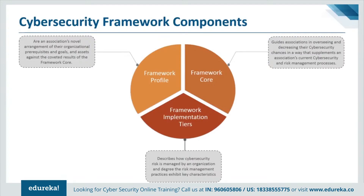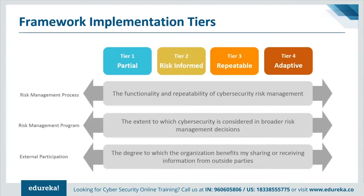Profiles are primarily used to identify and prioritize opportunities for improving cybersecurity at an organization. The tiers describe the degree to which an organization's cybersecurity risk management practices exhibit the characteristics defined in the framework. The tiers range from Partial, which is Tier 1, to Adaptive, which is Tier 4, describing an increasing degree of rigor and how well-integrated cybersecurity risk decisions are into broader risk decisions. Tiers do not necessarily represent maturity levels; organizations should determine the desired tier to meet organizational goals and reduce cybersecurity risks to an acceptable and fiscally feasible level.